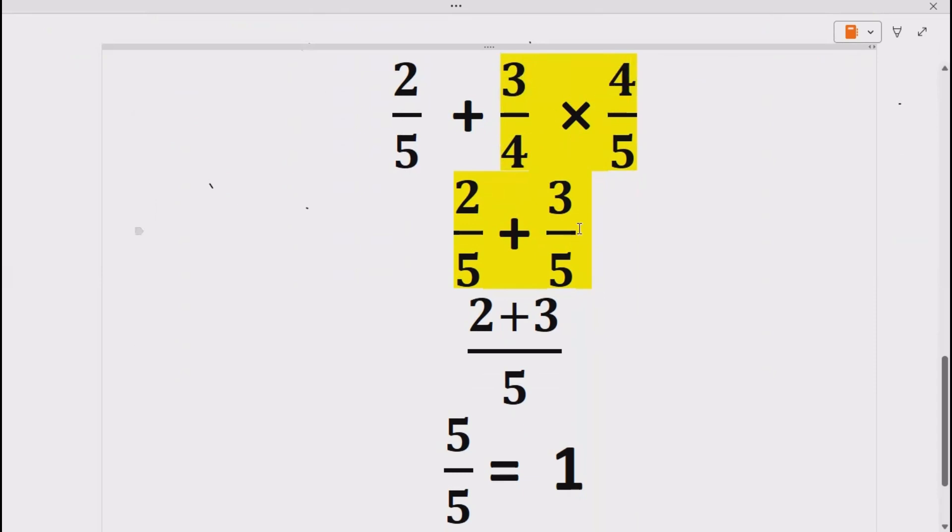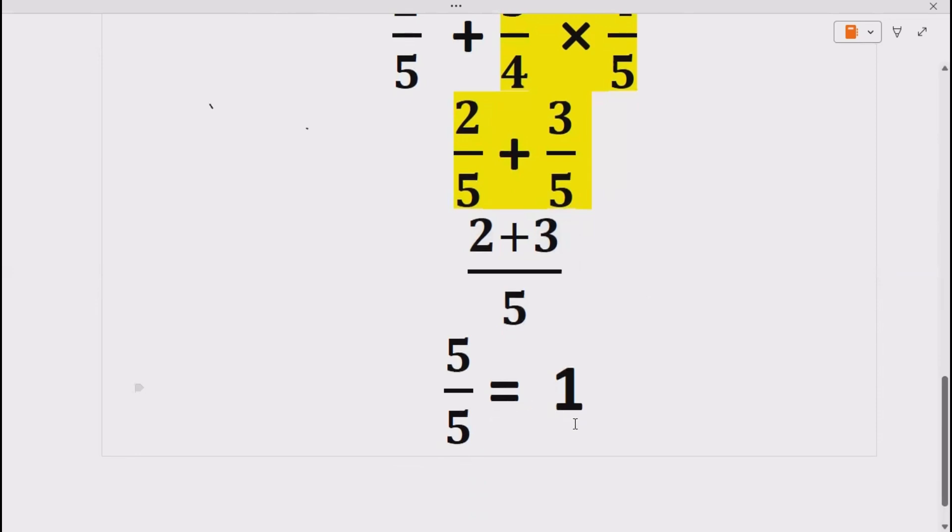3 and 5 remain as is. Now according to BODMAS or PEMDAS we have to do this addition. In addition we know that we have the same denominator, i.e. 5 remains as is, and the numerator becomes 2 + 3. Now 2 + 3 is 5, so we have 5/5 which equals